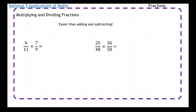So 6 over 11 times 7 over 9. What you can do with multiplying fractions is you can look at the diagonal numbers and see if there's any number you can divide them both by. So if I look at 11 and 7, so the bottom left and top right, there's no number that can divide them both.